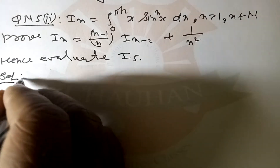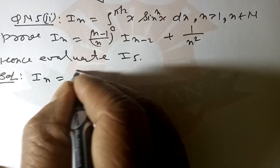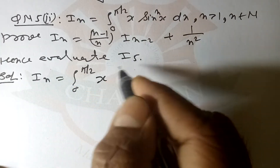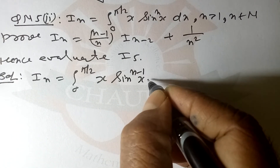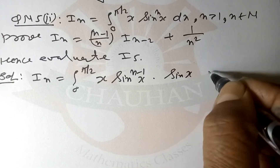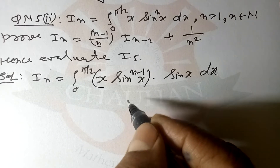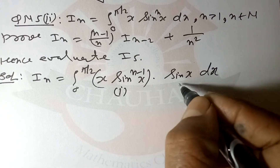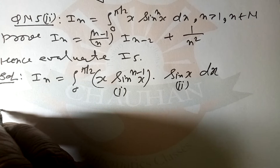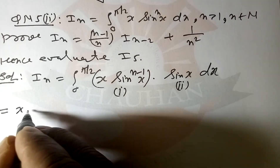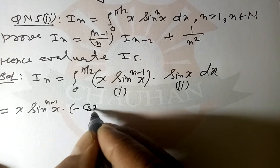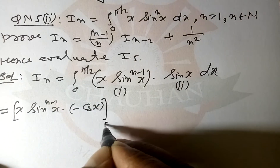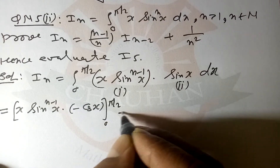Solution begins now. In = ∫₀^(π/2) x·sinⁿ(x) dx can be written as ∫₀^(π/2) x · sin^(n-1)(x) · sin(x) dx. This is a reduction formula question. The first function is x·sin^(n-1)(x). Applying integration by parts: first function times integral of second gives -cos(x), evaluated from 0 to π/2.